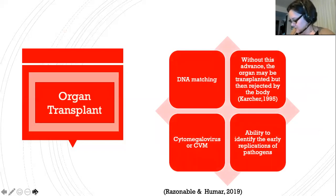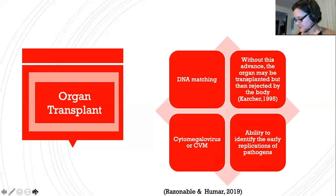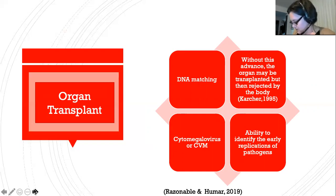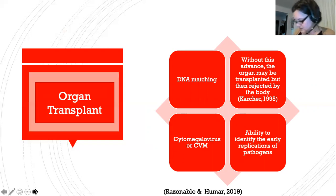DNA matching is also used to match organ donors to their transplant recipients, decreasing the possibility that donated organs will be rejected. Post transplant, there is a high possibility that the recipient may contract illnesses and serious infections as their immune system is weakened. Cytomegalovirus is a common infection that can be contracted by transplant recipients, and through PCR it can be identified early, reducing further complications.